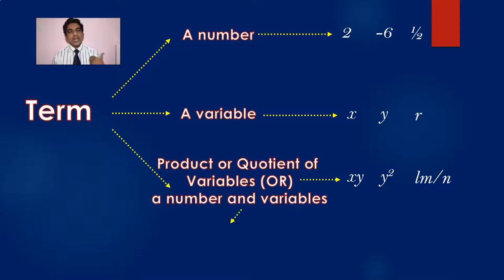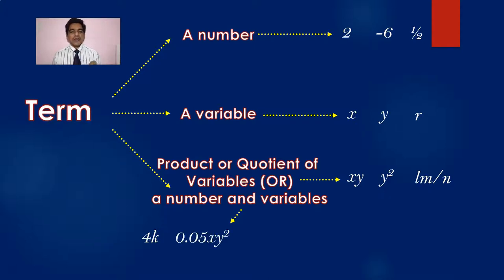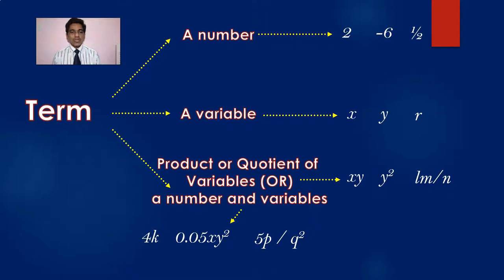Or involving a number and variables — like 4k, which means 4 into k — this is also a term. 0.05xy square is also a term.